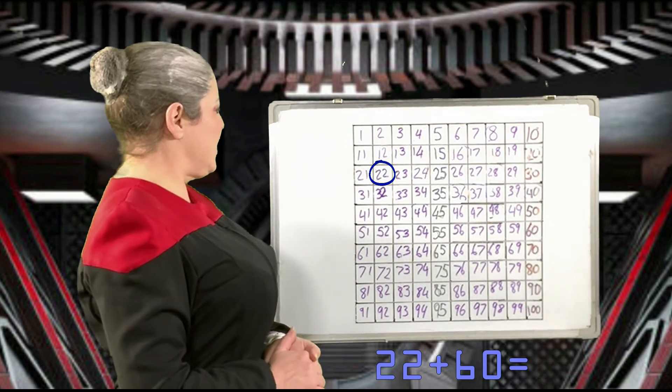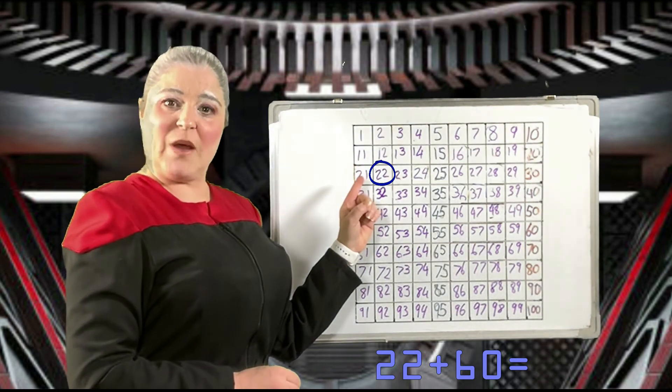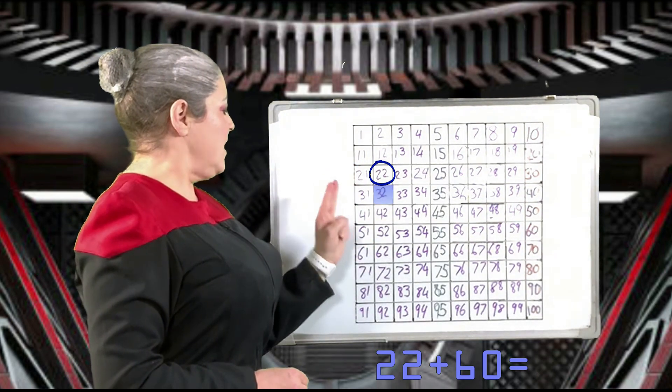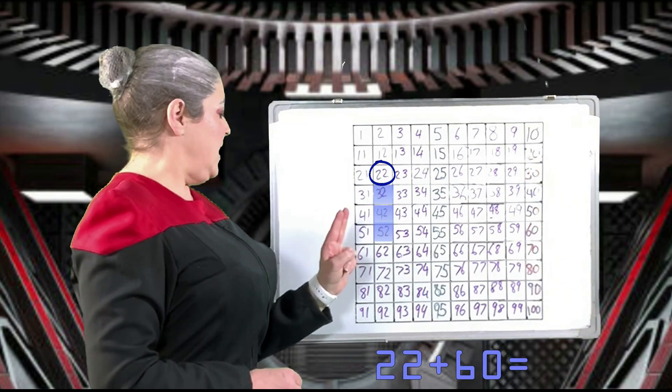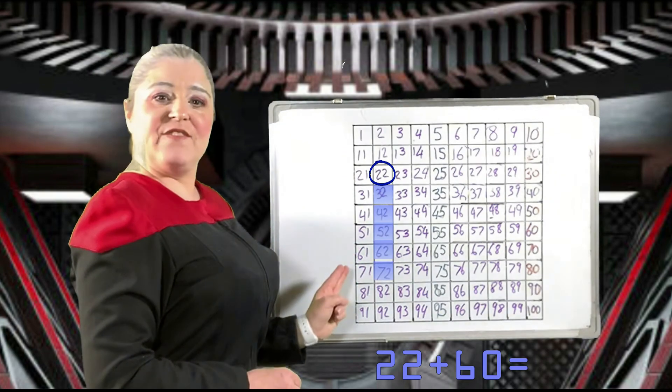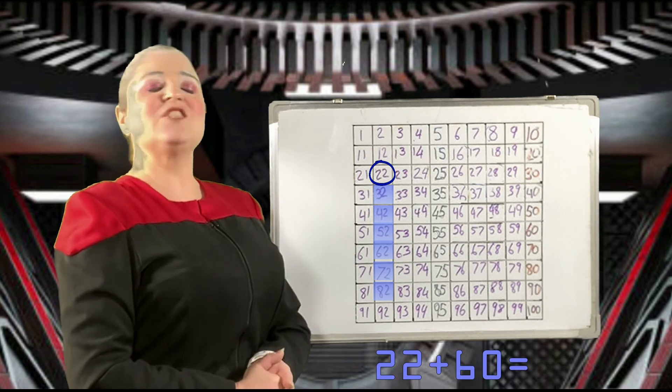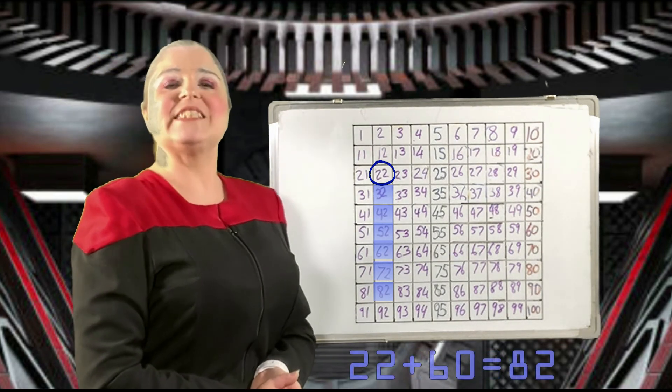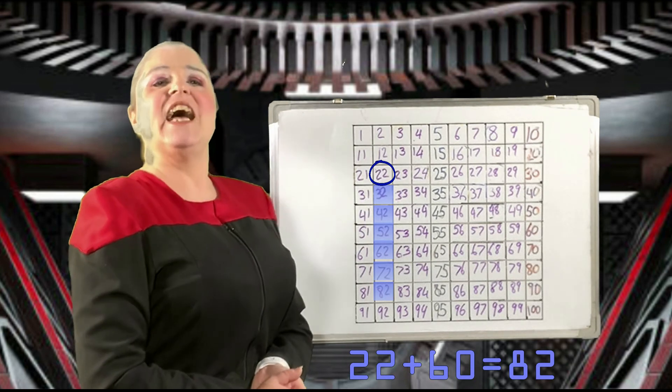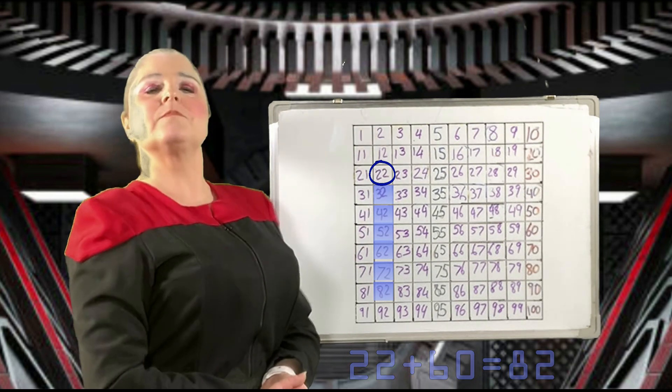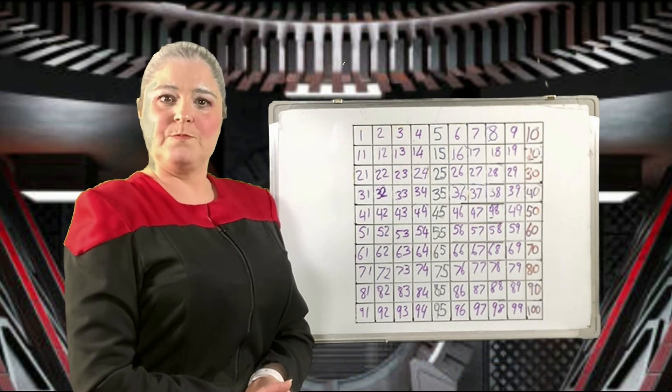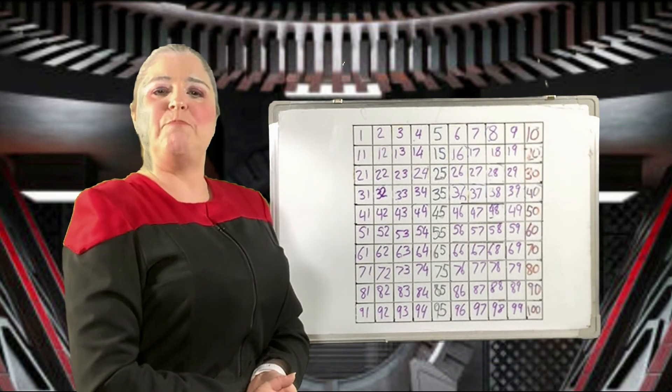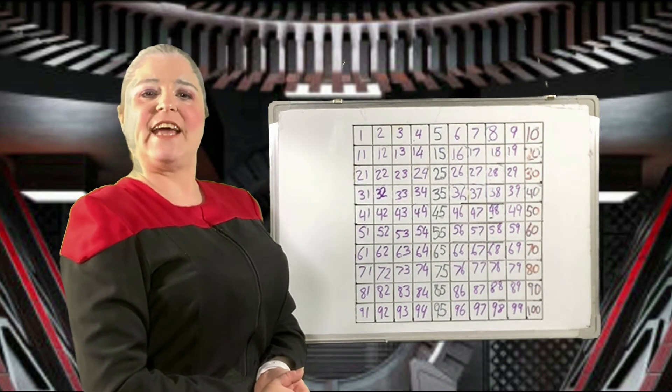Very good. Starting from 22 and moving six squares down: one, two, three, four, five, six. We land on 82. 22 plus 60 is 82. Well done. I will be sure to tell Commander P. She will be pleased at all we have discovered here today.